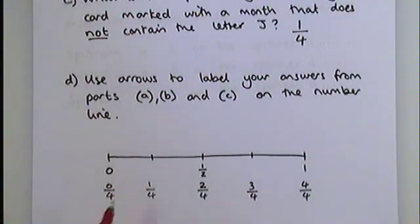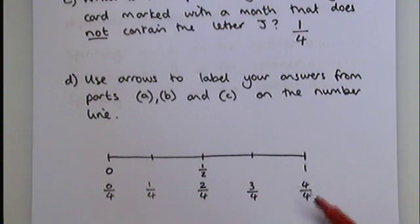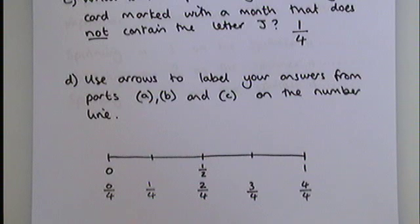Remember, something that would have zero chance out of four would be described as impossible. Something that always happened every time you picked a card, four times out of four, so four ways of doing it out of the four cards in total, would be certain to happen. And something that only happens two times on two of the cards out of four would be evens.